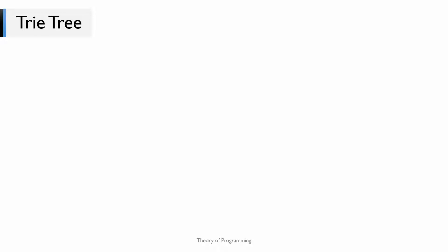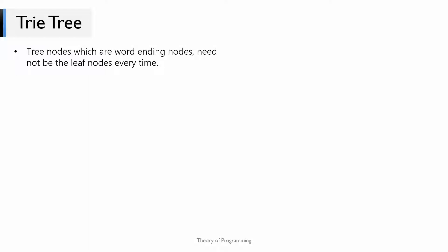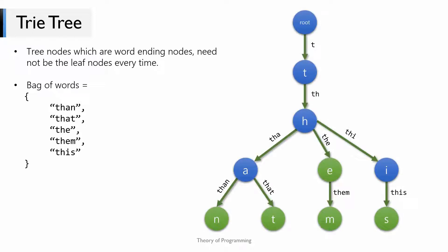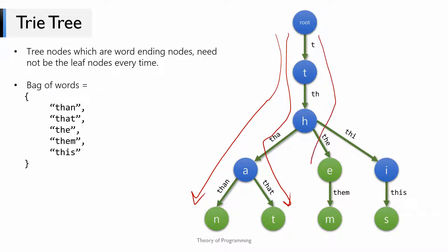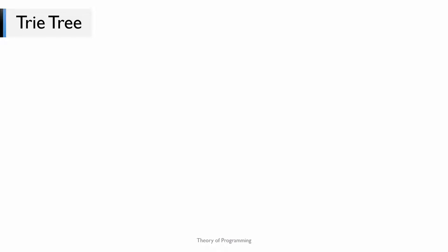Every path from root to leaf will be a word in the input bag of words, but this is not always true — that's why we still need to mark word endings differently with green nodes. Consider this input bag of words — pause the video and try to draw a Trie tree. It would look like this: we have four root-to-leaf paths, but five input words. The node E is also a word ending — it's the word ending for 'the'. So remember, word-ending nodes need not always be leaf nodes.